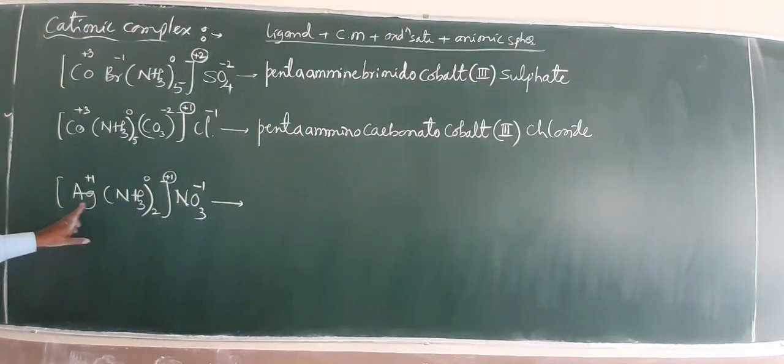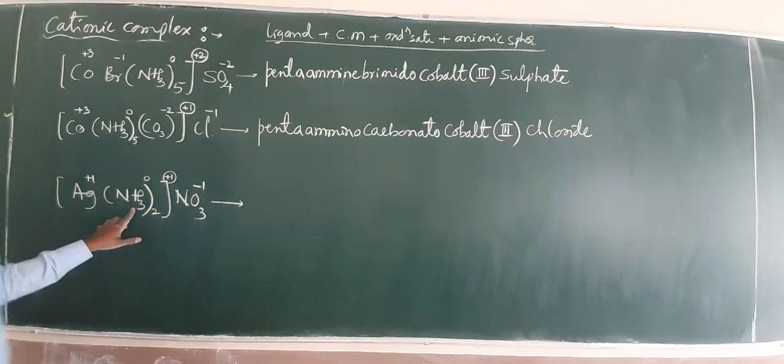Now, come to the next one. Nitrate is minus 1. Ammonia 0. Silver. This is amine.